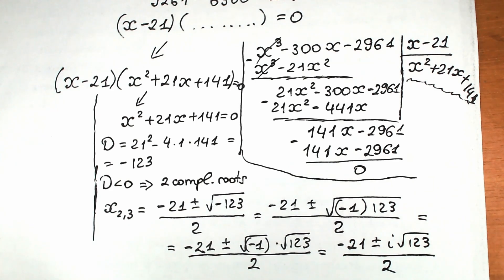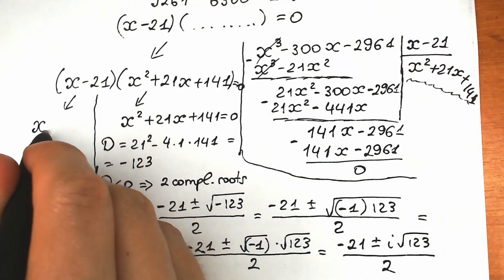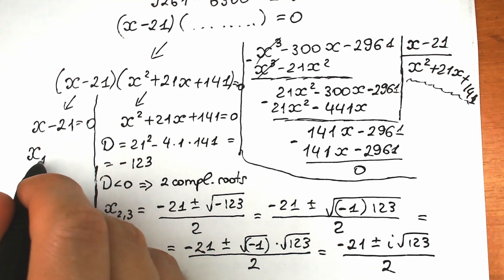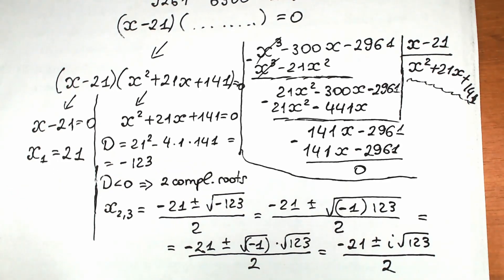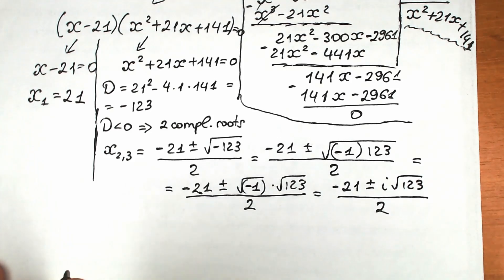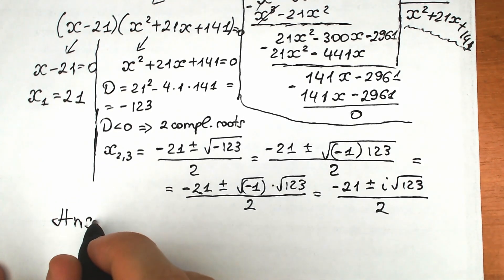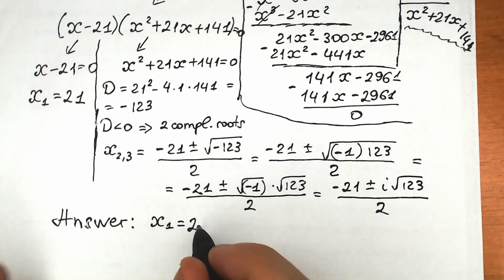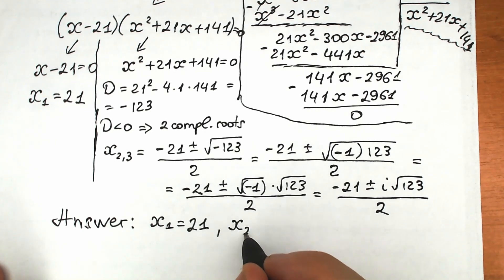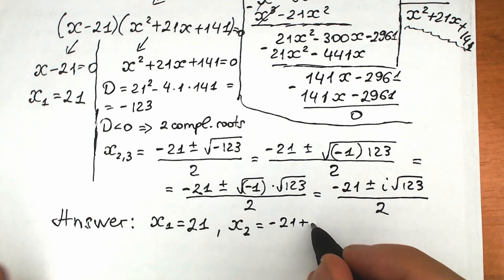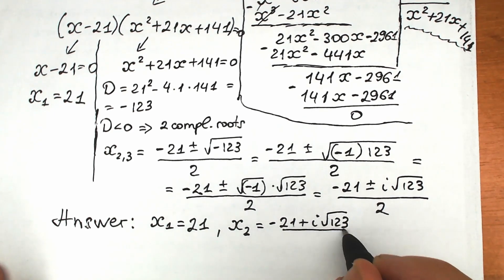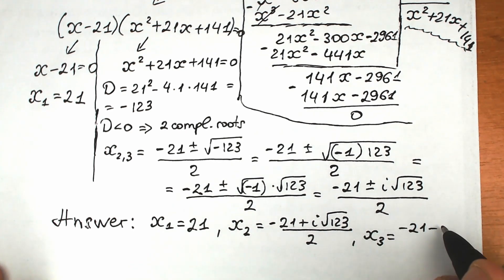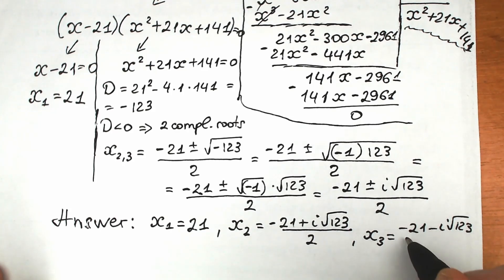These are our two complex roots. For the real root, from x minus 21 equals zero, we get x₁ equals 21. So our three answers are: x₁ equals 21, x₂ equals negative 21 plus i√123 over 2, and x₃ equals negative 21 minus i√123 over 2.